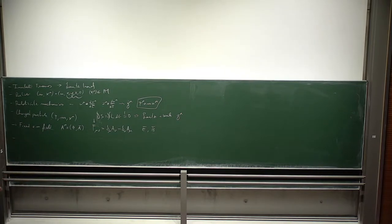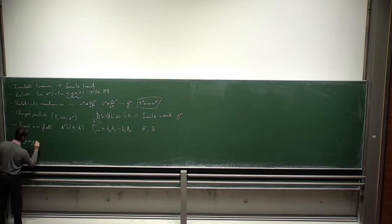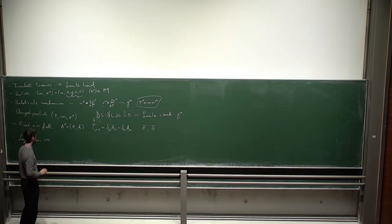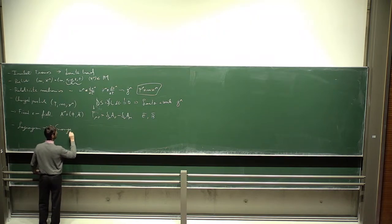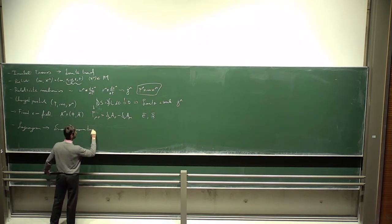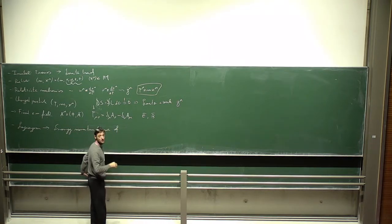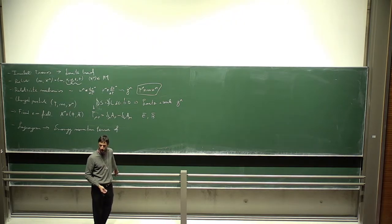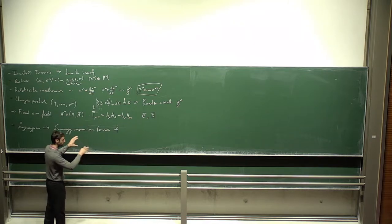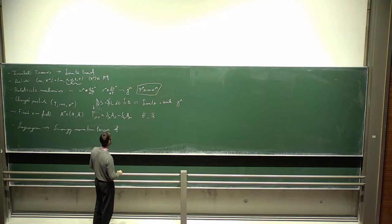Then we derived and related our Lagrangian to something connected to the energy, energy fluxes, and momentum flux of our system — namely the energy-momentum tensor. This is something very generic that can be applied to any field of physics. In general relativity, you need an energy-momentum tensor that sources gravity. In this case, the energy-momentum tensor of the electromagnetic field is responsible for the properties of the electromagnetic field.